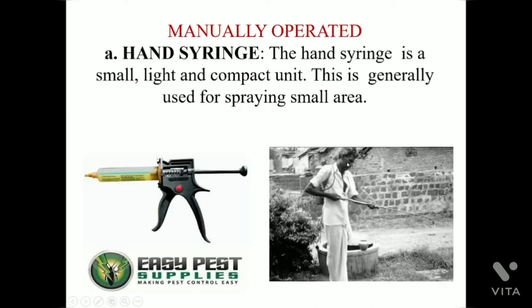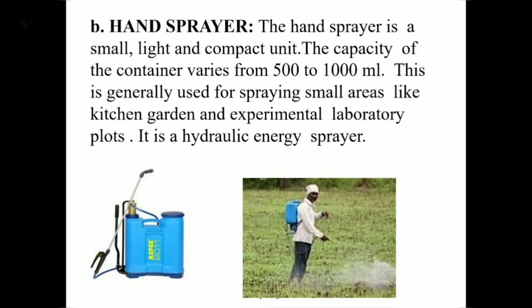Here we are going to see only manually operated sprayers. First, hand spring. The hand spring is a small, light and compact unit. This is generally used for spraying small areas. The second one is the hand sprayer. The hand sprayer is a small, light and compact unit. The capacity of the container varies from 500 to 1000 ml. This is generally used for spraying small areas like kitchen garden and experimental laboratory plots.